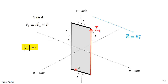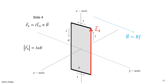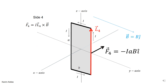For the right side, L4 points from the beginning to the end of that side, in the plus Z direction. The angle between L4 and B is 90 degrees, so the magnitude of the force is I·L4·B·sin(90°) = I·a·B. Using the cross product — fingers in the direction of L4 curling toward B — the result points in the minus I direction. So the force on side four has magnitude IAB and points in the minus I direction.